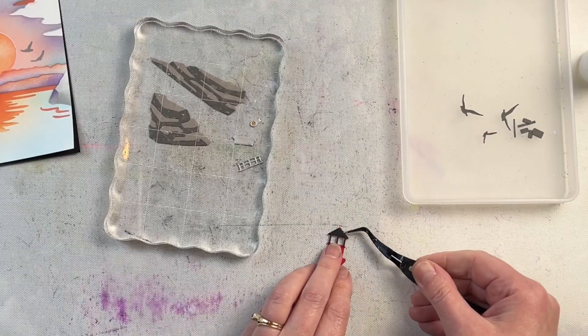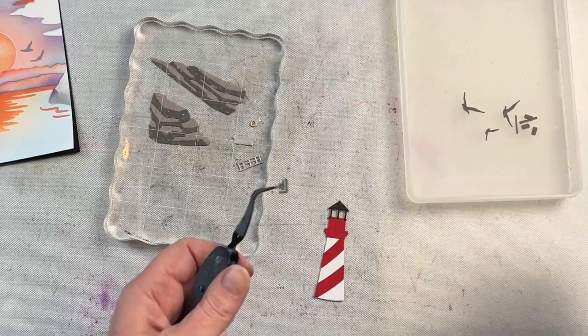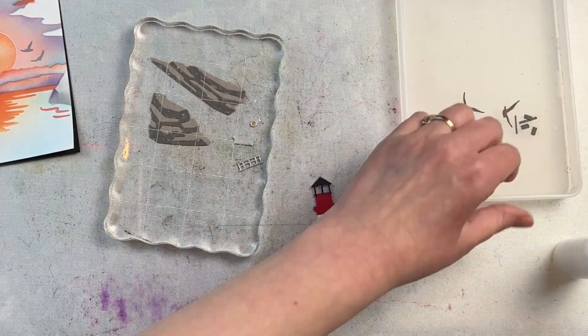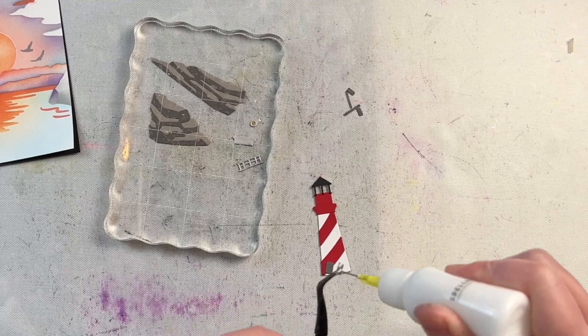When you do the die cutting with these dies, it creates a crease where the pieces on top are supposed to go. So it makes it very easy to know exactly where the little pieces are supposed to be placed.